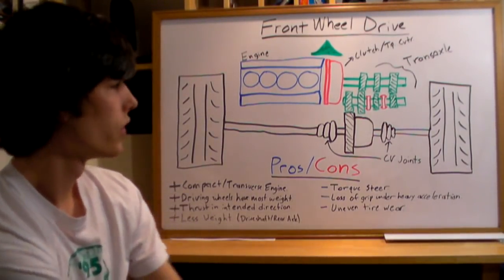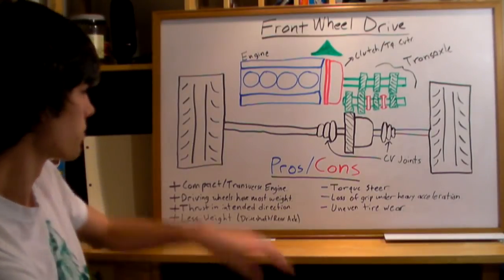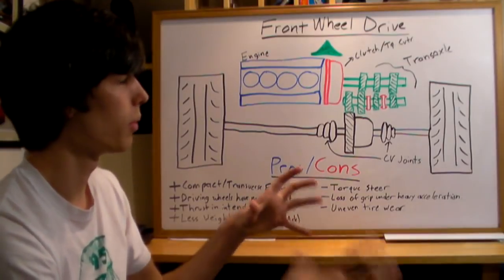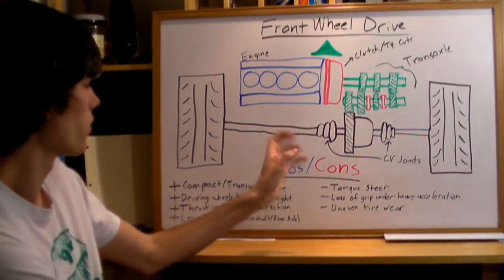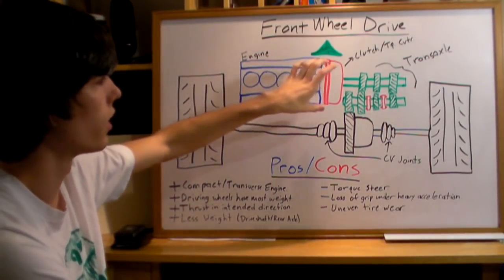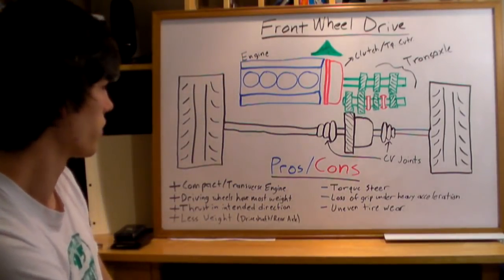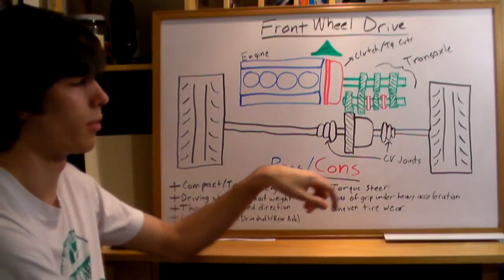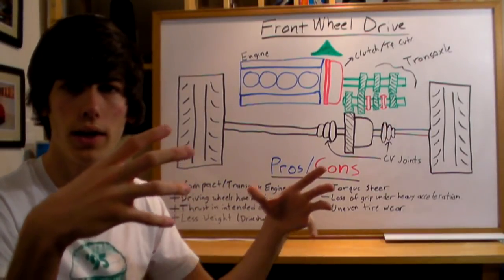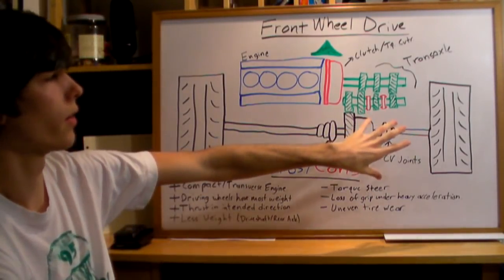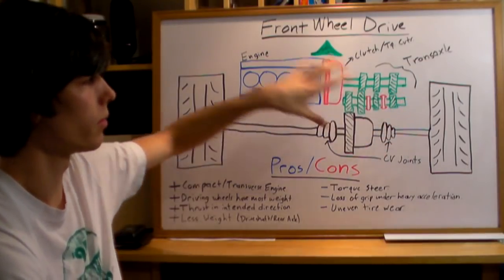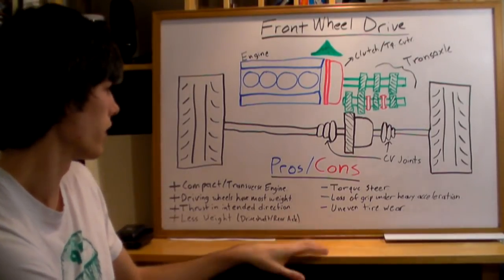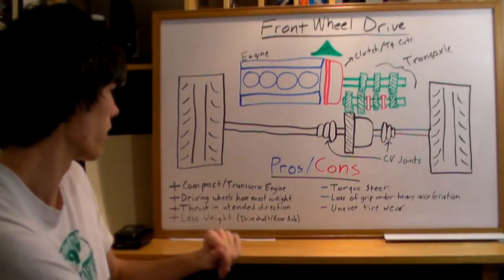Now, for some of the advantages and disadvantages, one of the main advantages is that it's compact. You just have a small space that you can fit this in. Also, with the transverse engine, you can keep the front of the car shorter, so you can keep the car smaller. Also, driving wheels have the most weight. All the weight is on top of those front two tires. Well, not all the weight, but the majority of it, because the engine's right there, resting on it. So, they're going to have a lot of traction when you're driving, which is good, since they're the driving wheels.